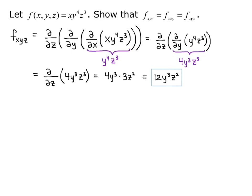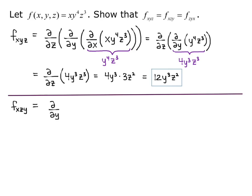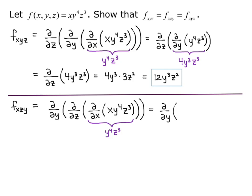Now we switch our order and show that f_xzy is equivalent. So f_xzy is the partial derivative with respect to y — last — of the partial with respect to z — second — of the partial with respect to x of xy⁴z³. With respect to x, we get y⁴z³ since the derivative of x is 1. Then the partial with respect to z gives y⁴ times 3z squared, which is 3y⁴z².